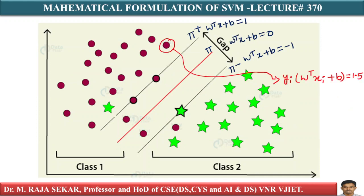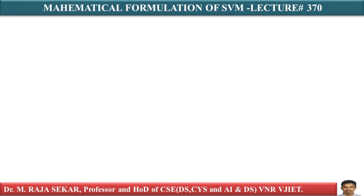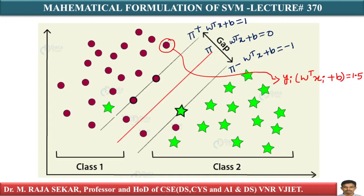For different points you are getting different ξ values. For example, if you take this particular point where yi into W transpose Xi plus b is 1.5 — 1.5 is obviously greater than 1 — this is a correctly classified point.